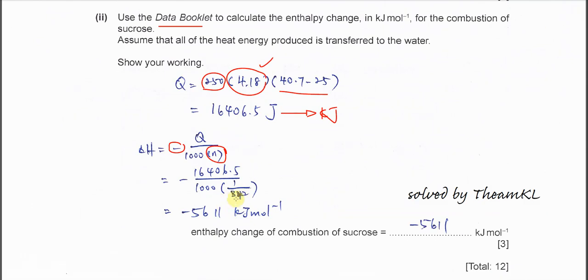Which is 342. So this is the moles of sucrose that is used and the heat that is generated is absorbed by water. After you calculate, you should get -5611 kJ/mol. This is the calculation. That's all for this question. Thank you.